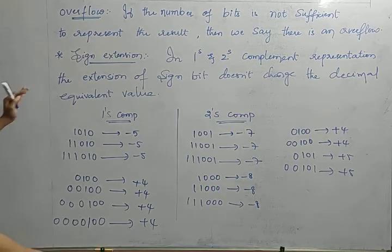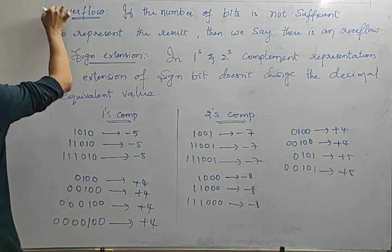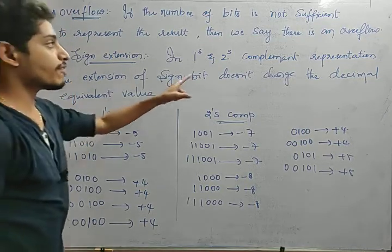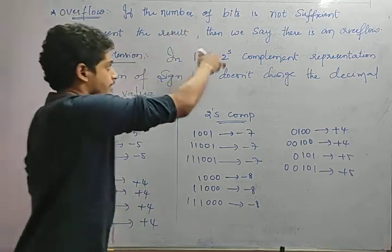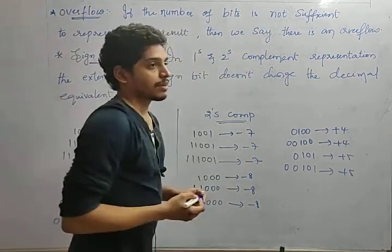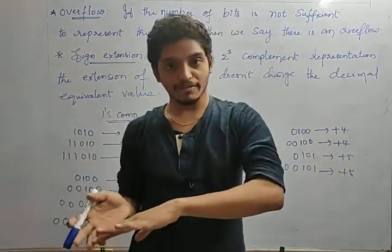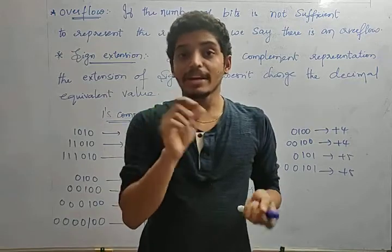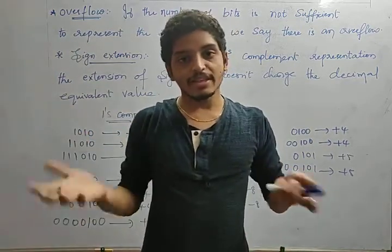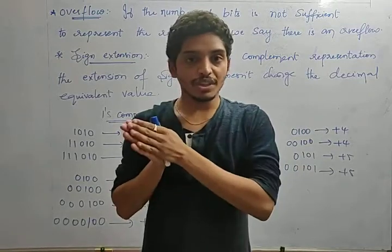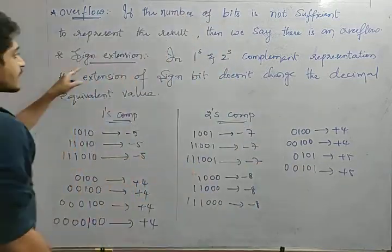Let's see a concept called overflow and sign extension. What do we mean by overflow? If the number of bits is not sufficient to represent the result, then we say there is an overflow. If the register is not sufficient to store more number of bits, there is an overflow — meaning there are over-number of bits to be stored in the register.